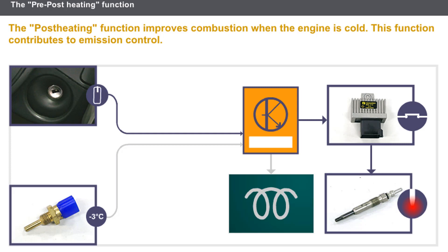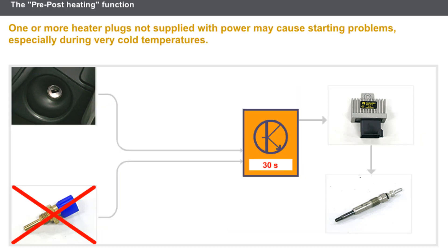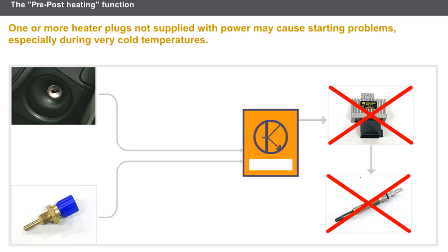When the engine has started, the computer analyzes the coolant temperature. The temperature of the coolant determines the duration of the post-heating phase. The computer sends a control signal to the preheating unit, which powers the heater plugs. In the event of a fault on the coolant temperature sensor, the computer uses a predetermined preheating period. A fault on the preheating unit may prevent the supply of power to the heater plugs. One or more heater plugs not supplied with power may cause starting problems, especially during very cold temperatures.